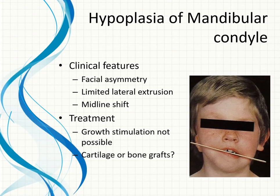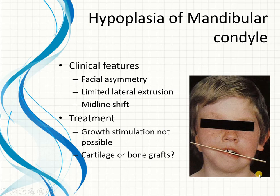Clinically, if hypoplasia exists on one side, there may be asymmetry. As seen in the photograph, the plane of occlusion is slanted toward the side of hypoplasia, and there may be a midline shift and limited movement of the joint. Treatment is not straightforward due to the inherent growth defect, but cartilage and bone grafts have been tried in severe cases where joint movement is impeded.